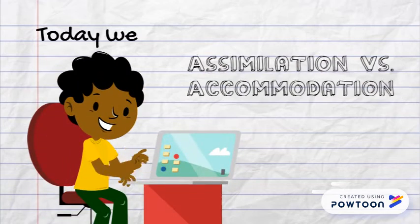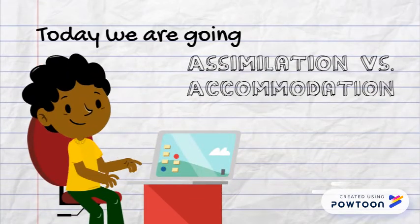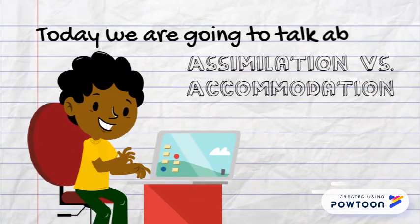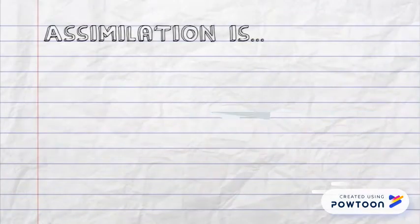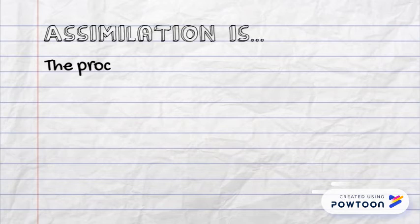Today we are going to be talking about assimilation, accommodation, and the process of organizing categories of information and the relationship among them. First, we will start off by defining the differences between assimilation and accommodation.